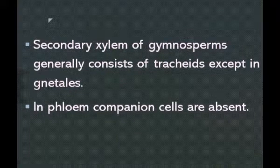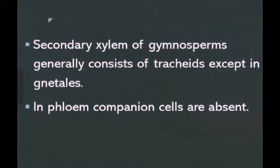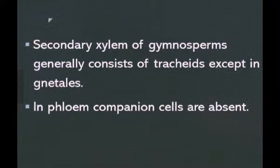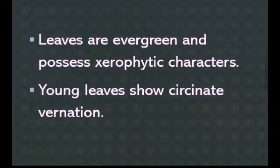Regarding the secondary xylem of gymnosperms, the xylem contains only tracheids — no vessels are present. In the phloem, companion cells are absent. This is one characteristic feature of gymnosperms: the xylem is devoid of vessels and the phloem is devoid of companion cells.